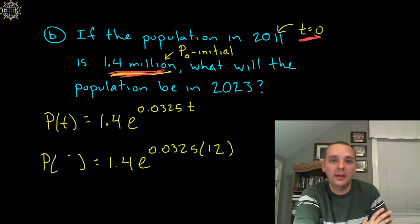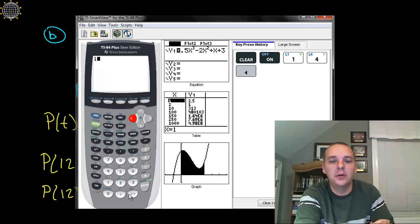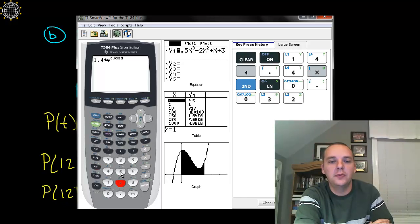So we're looking at, in actuality at P of 12. In other words, what's the population 12 years after 2011? So P of 12 would be equal to, let's see, we'll pop all that in the calculator. We'll do this real quickly here. We'll take 1.4. Remember our units are in millions already. 1.4 times E, raised to the 0.0325 times 12.